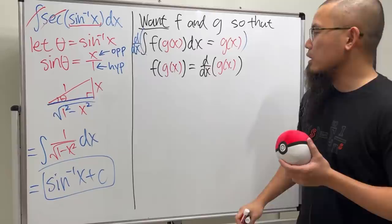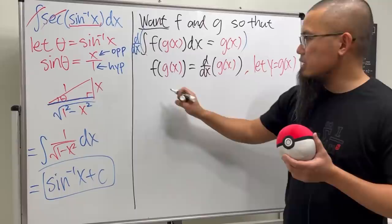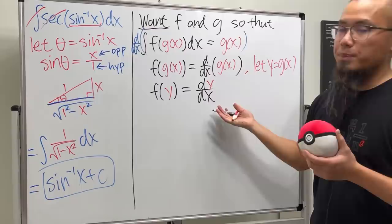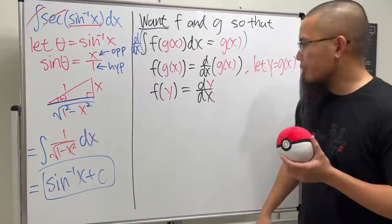And of course this right here is not a notation that we like when we want to solve a differential equation. So I'm just going to say let y being equal to g of x, because this way we can see that we have f as a function of y being equal to dy dx, much better.